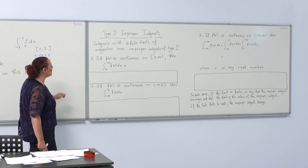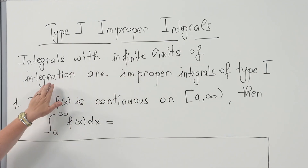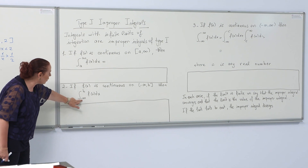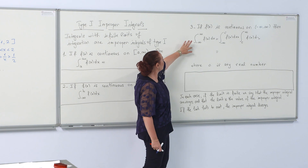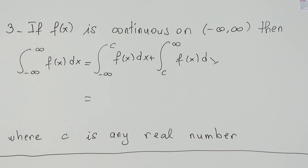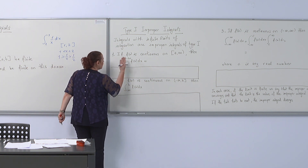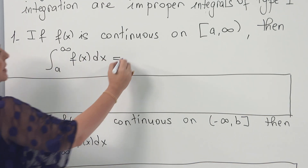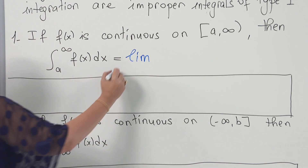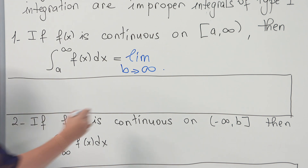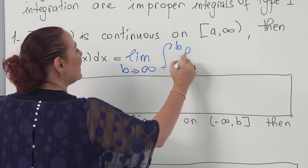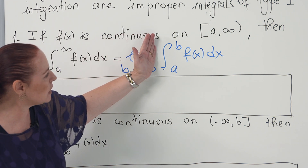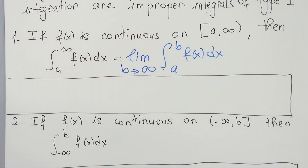Improper integrals of type 1 are integrals with infinite limits of integration. You can have the upper limit be infinite, the lower limit be infinite, or both. If your function is continuous on the interval and the upper limit is infinite, then this improper integral is defined as the limit as b goes to infinity of the integral from a to b of f of x dx. So to calculate it, you first calculate the definite integral and then take the limit.